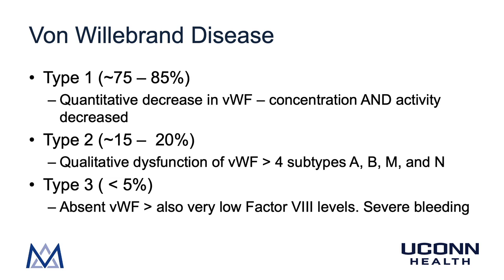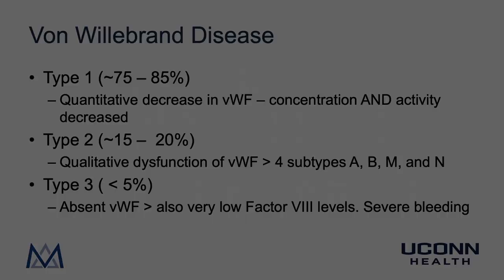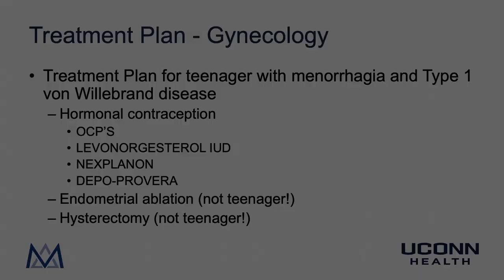For the most part, Type II patients have a normal quantity of von Willebrand factor — it just doesn't function well for various reasons. Type III is the least common, and these patients have a complete absence of von Willebrand factor and very low Factor VIII levels. They have severe bleeding and often present very similarly to patients with hemophilia A.